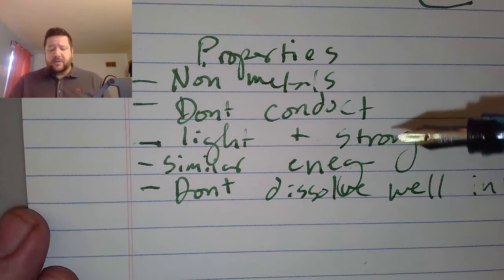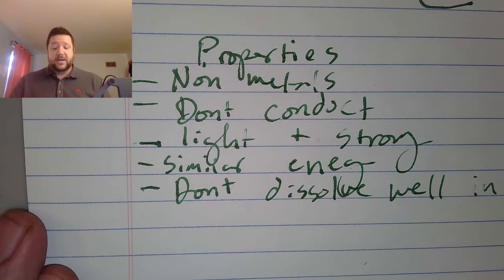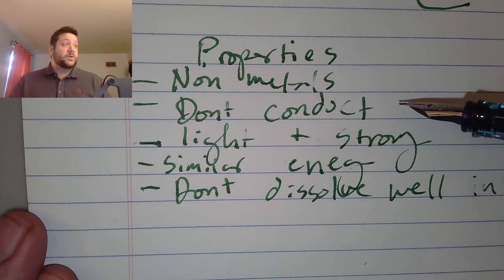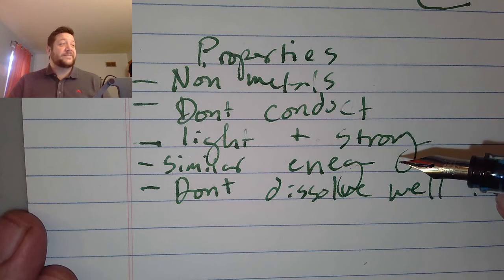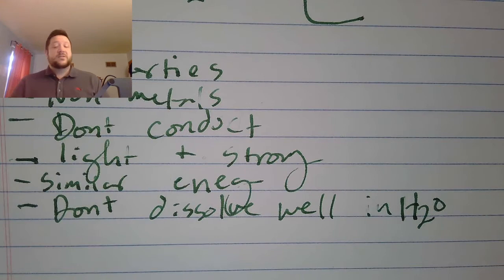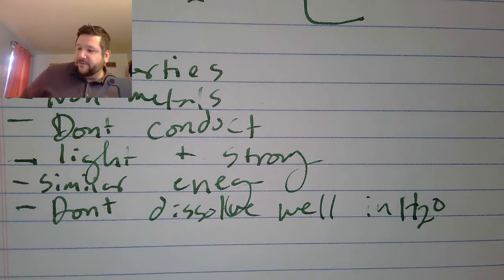Here are properties of covalent bonds compared to ionic bonds. Covalent bonds typically form between non-metals; ionic bonds form between a metal and a non-metal. Covalent compounds don't conduct electricity well; ionic bonds do conduct electricity well. Covalent compounds are often light and strong; ionic compounds tend to be brittle and dense. Covalent bonds have similar electronegativities; ionic bonds have different electronegativities. Covalent bonds do not dissolve well in water, whereas ionic bonds dissolve very well in water.